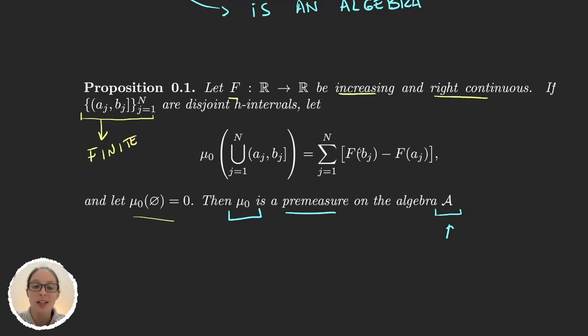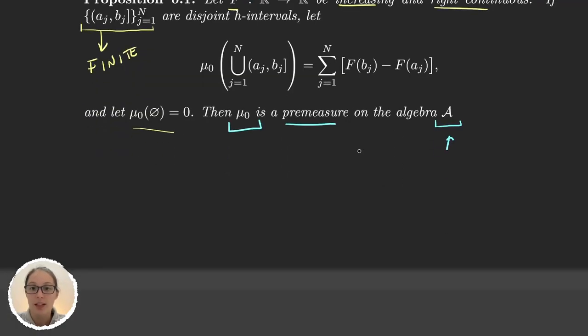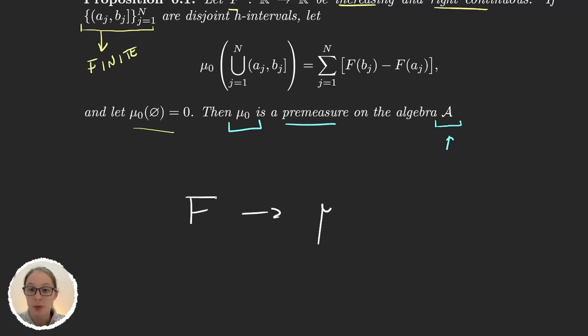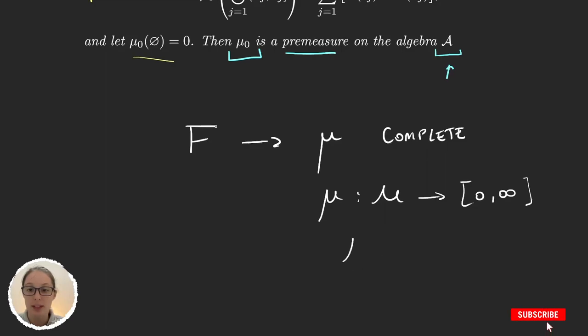So actually, Borel measures we will see satisfy certain regularity properties. They are very easy and nice to work with. So we will actually care a lot about them. But so what I said is that given a function F, we can define a measure μ. And this measure μ is complete. This measure μ then is defined on a sigma algebra M to [0, ∞). And what happens is that this sigma algebra M contains the Borel sets.